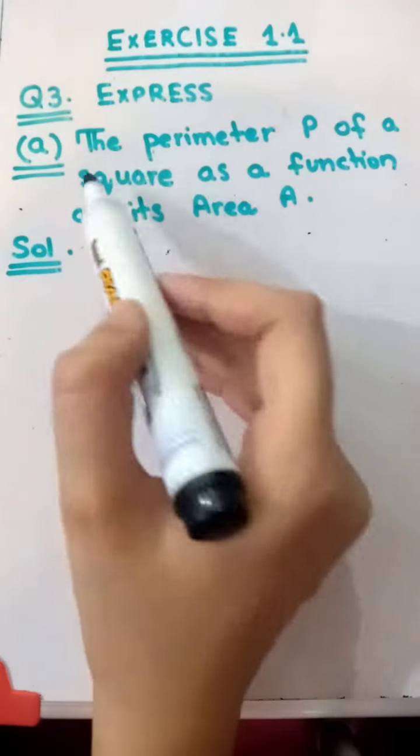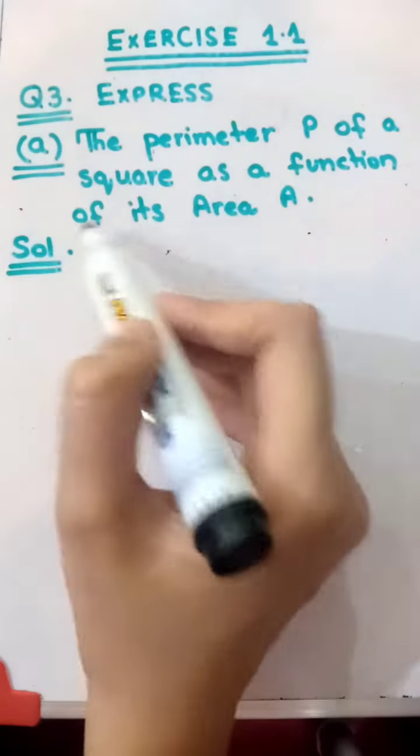Assalamualaikum dear student, we have the question: express the perimeter P of a square as a function of its area A.